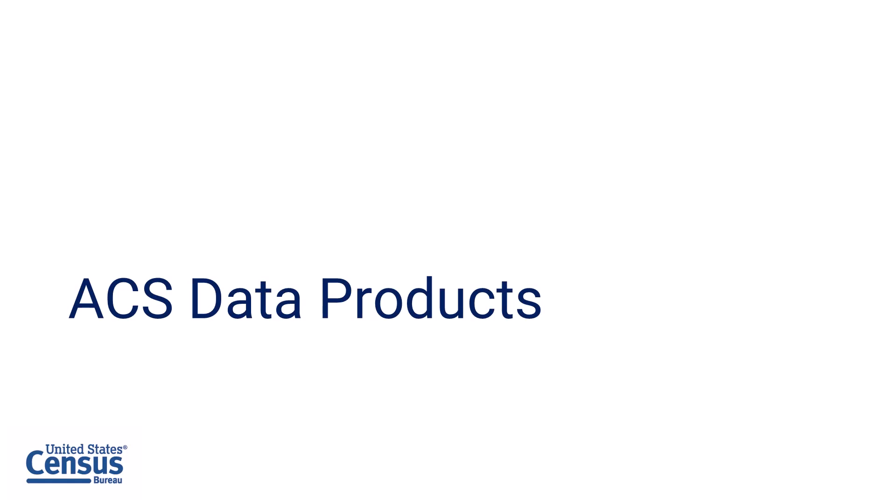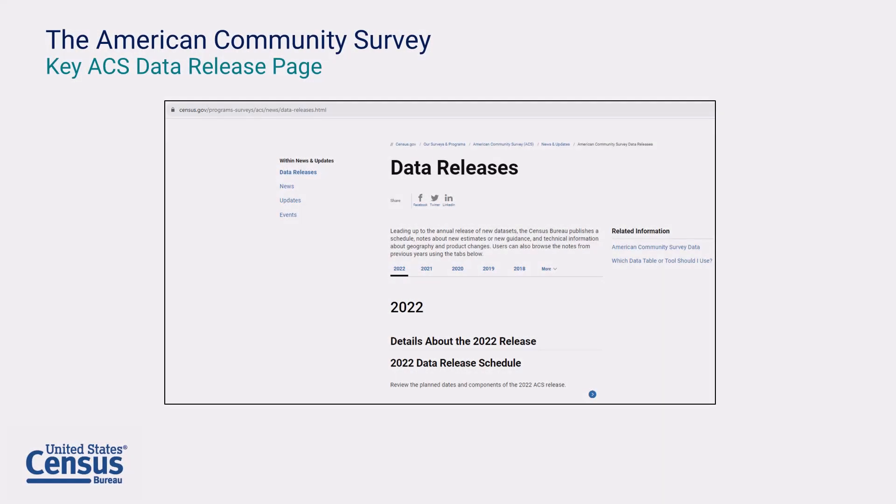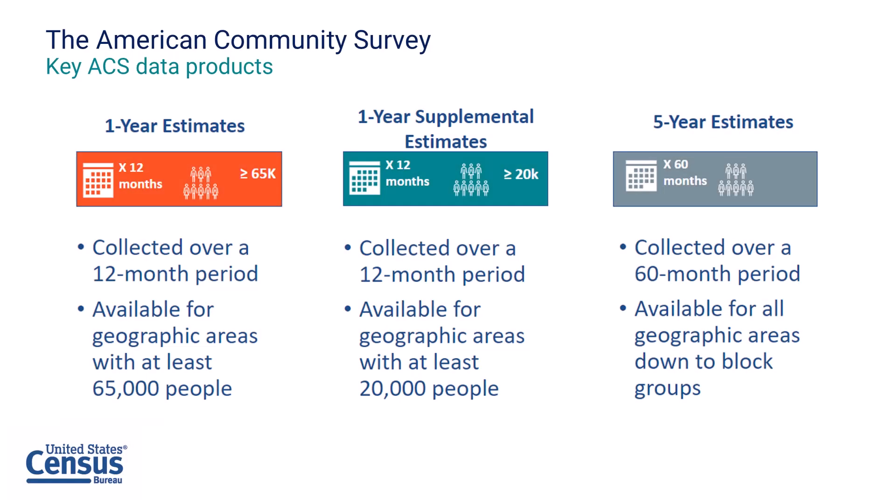What are the main ACS data products? You can access the most current and previous data release schedules on the ACS data releases page shown here. You can also browse important information supporting each of the data releases. The link to this page and all other web pages we show today are provided in the links below the video. As explained in the previous modules, ACS data are released based on the population size of each geographic area. The Census Bureau generally releases three main ACS data products: the one-year, one-year supplemental, and five-year estimates.